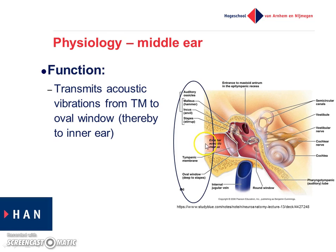An acoustic signal gets through the external auditory meatus onto the eardrum — the tympanic membrane — and gets further processed via the three little bones. It then reaches the oval window, and behind the oval window is the inner ear. At the end of this video clip I'll return to this picture and explain it again.